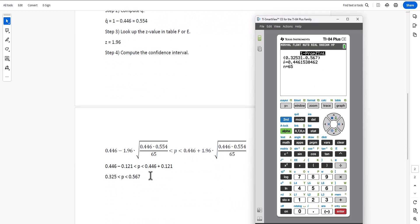Round to three places, 0.325, 0.567. Thanks for watching this video.